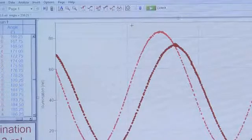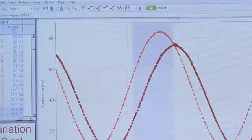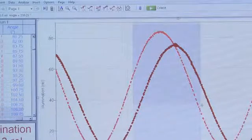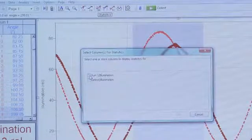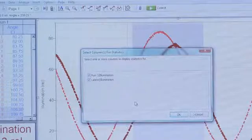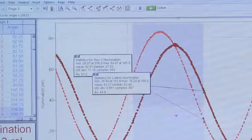To do that I select the first peak after angle 0 and tap on the statistics button. I want to analyze both the blank and the sample at the same time. Select OK.